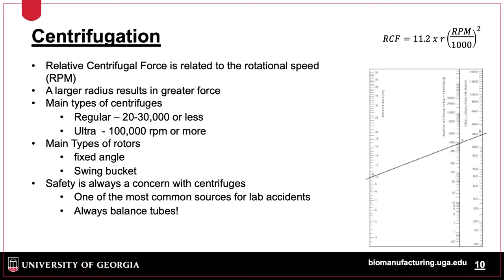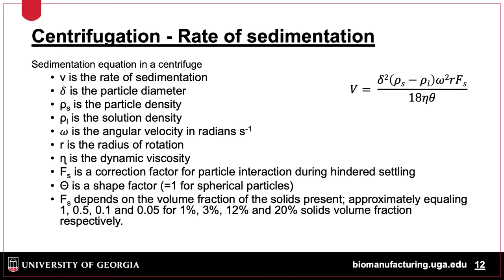In addition, there are two main types of rotors that go into these centrifuges. Fixed angle rotors, where the tubes are placed at an angle of around 45 degrees relative to the floor, and swing bucket rotors which swing out during rotation. Most importantly, safety is a big concern, with centrifuges being responsible for many lab accidents, so always remember to balance tubes prior to running a centrifuge.